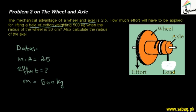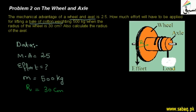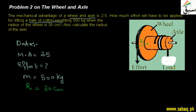We have the radius of the wheel, which I denote as capital R. The radius of the wheel is given as 30 cm. The radius of the axle, which is the small circumference, I denote as small r, and this is our unknown. So we also need to calculate the radius of the axle. There are two unknown quantities which we have to calculate.